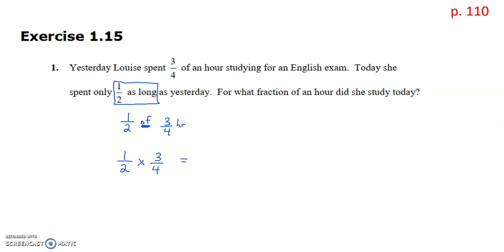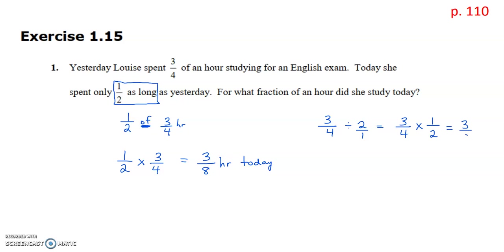We take one-half of three-quarters. There's nothing to cross-reduce, so we get three-eighths of an hour — that's what she studied today. There's another way: taking half of something means dividing by two. But with fractions you keep three-quarters, change to multiplication, and flip to get one-half anyway — the same result. Whenever you have a piece of something, you are going to do multiplication.